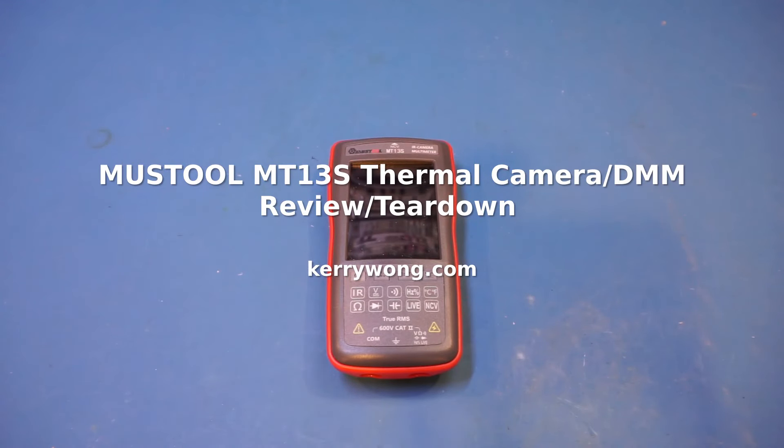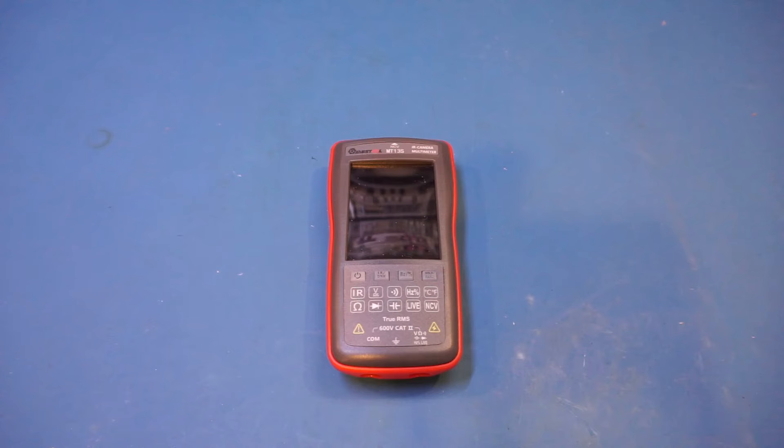Hi, what I have here on the workbench today is a MUSTO MT-13S thermal camera and digital multimeter combo device. This meter has a 192x192 resolution thermal imaging camera and a 10,000 counts multimeter built-in.